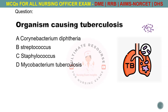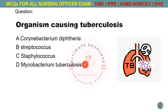Organism causing tuberculosis. Options are A. Corynebacterium diphtheriae, B. Streptococcus, C. Staphylococcus, D. Mycobacterium tuberculosis. The answer is Mycobacterium tuberculosis.